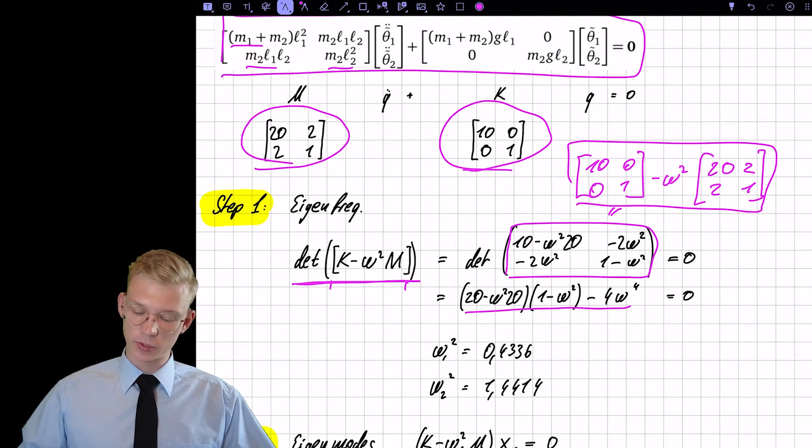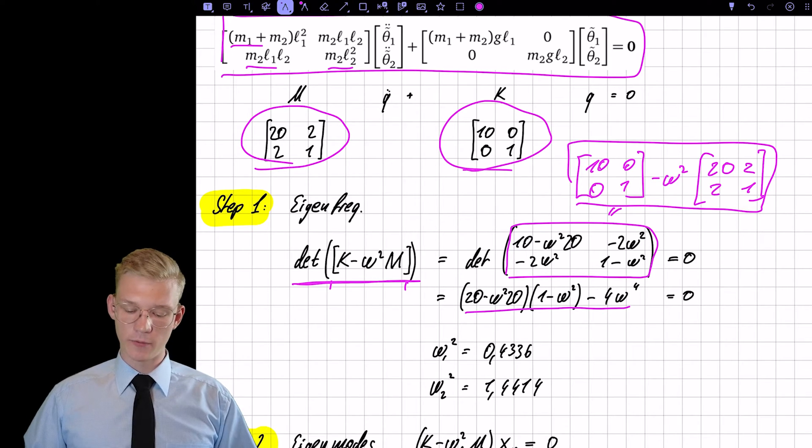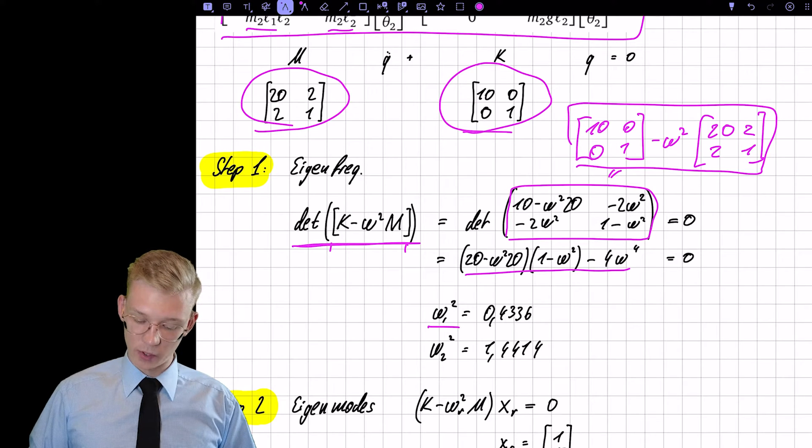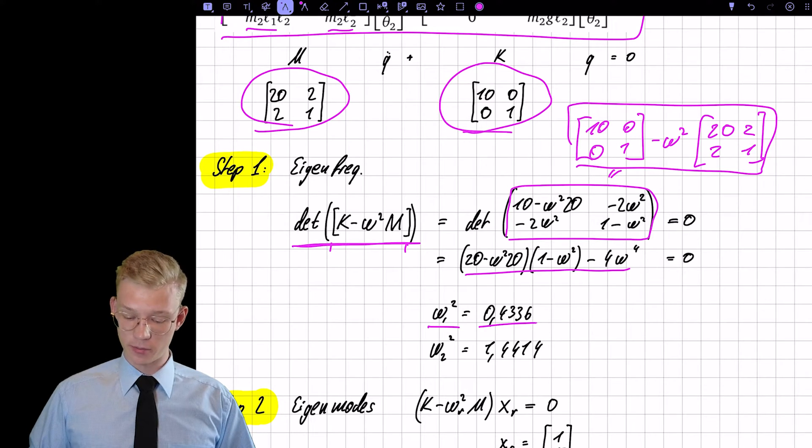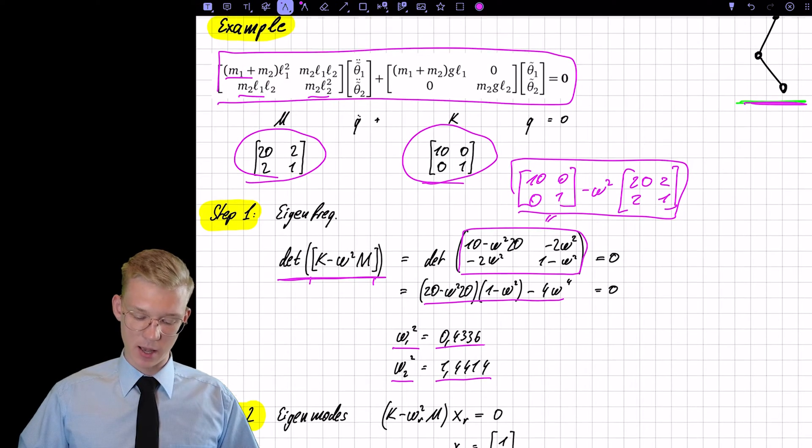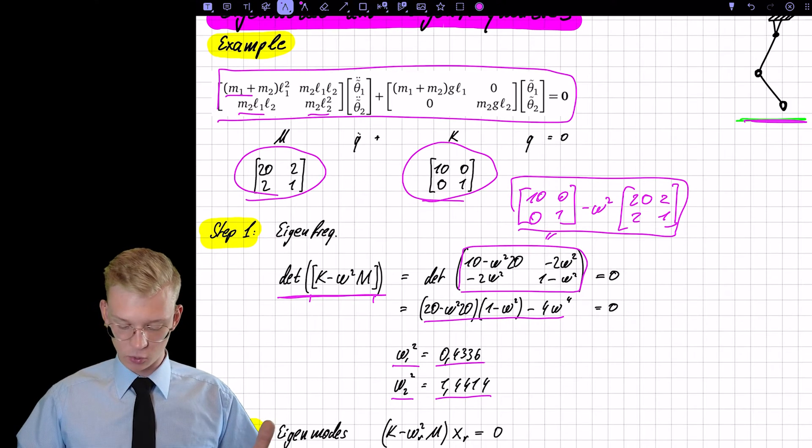We get this characteristic polynomial and we find two solutions. That is omega 1 squared is 0.4336 and omega 2 squared is 1.4414. So these are our eigenfrequencies squared.